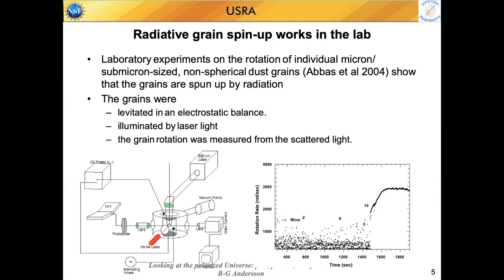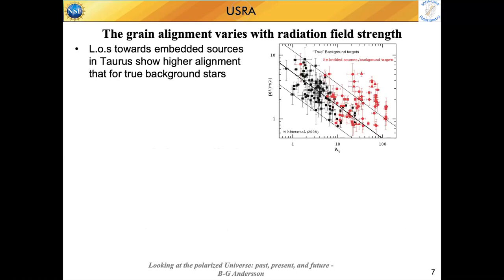The spinning up of dust grains has been supported and verified in the lab. The Barnett effect is the inverse of the Einstein-de Haas effect, a well-known solid-state effect. So theoretically and numerically, this all works. Does it work in the ISM? I don't have time to go through all the tests that have been done, so I'll focus on the first one: if grain alignment is driven by the radiation field, the efficiency should depend on field strength. That's been tested by a number of methods in a number of regions.